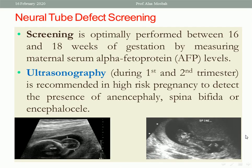Neural tube defect screening is optimally performed between 16 and 18 weeks of gestation by measuring maternal serum alpha-fetoprotein levels. Ultrasound during the first and second trimester is also recommended in high-risk pregnancies to detect anencephaly, spina bifida, or encephalocele. In the first trimester ultrasound, absence of the vault of the skull and part of the brain indicates anencephaly. Encephalocele appears as swelling emanating from the head, diagnosed by ultrasound in the second trimester.